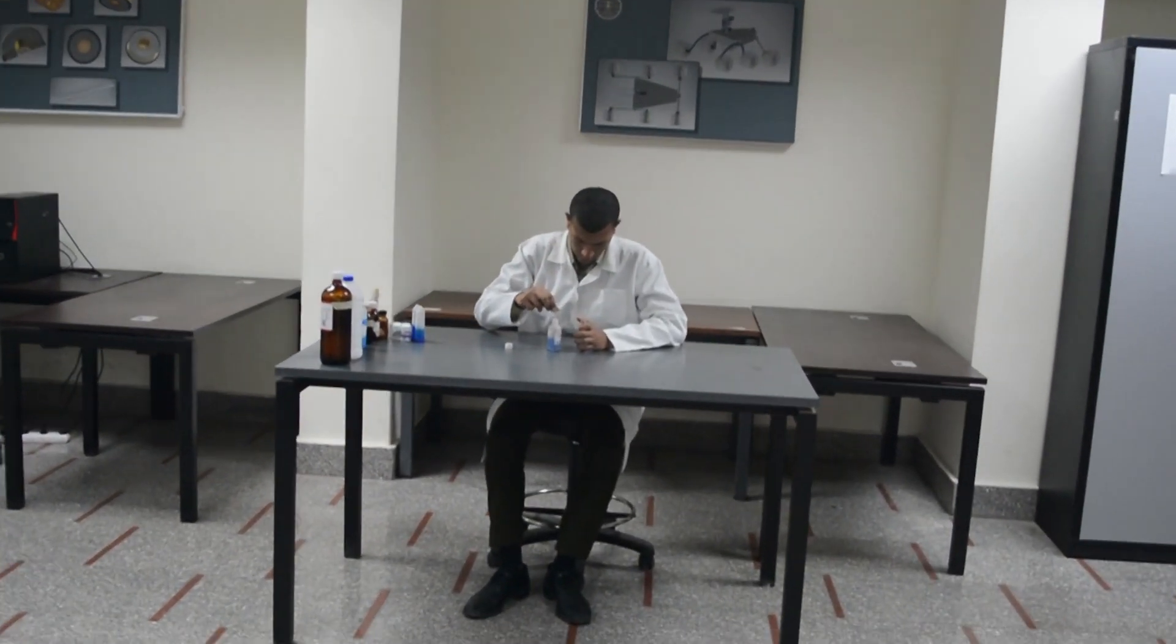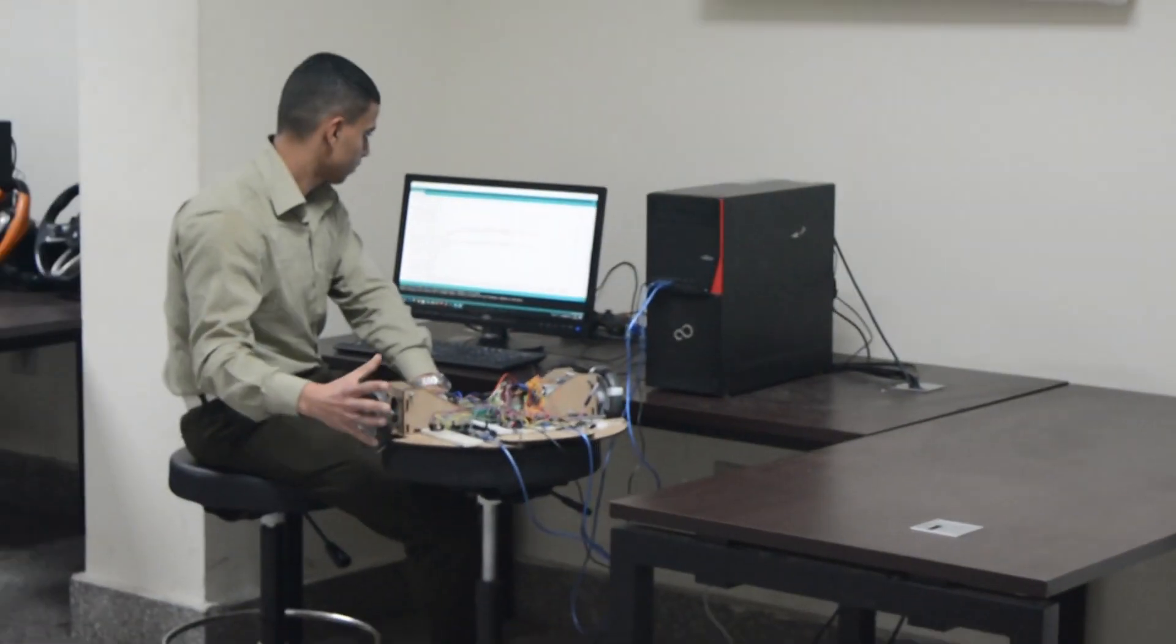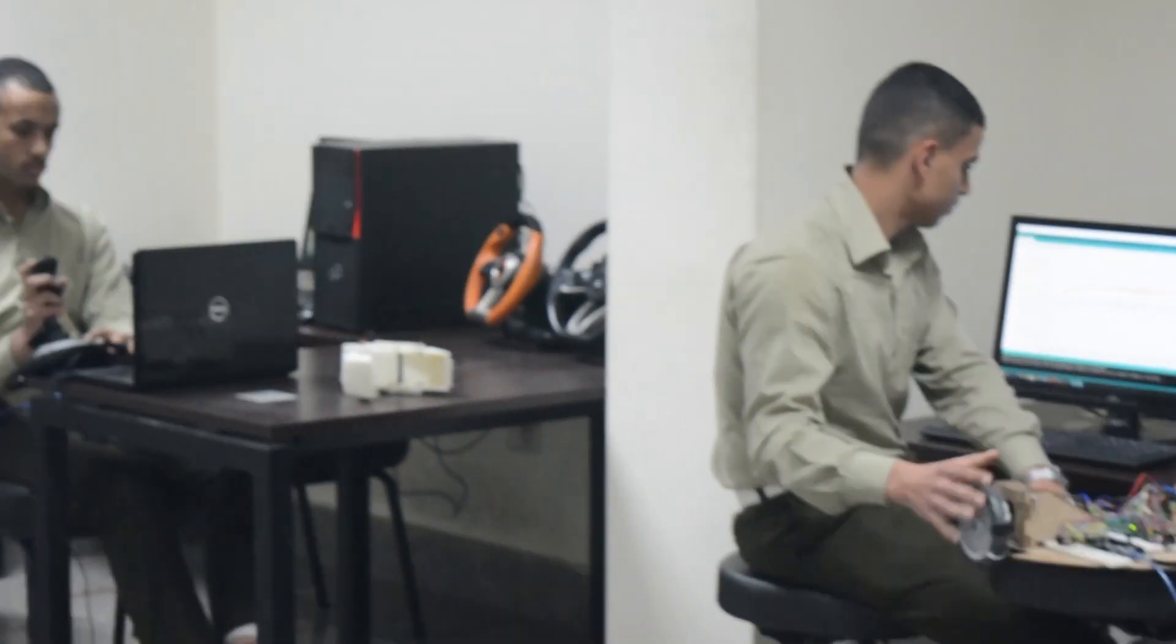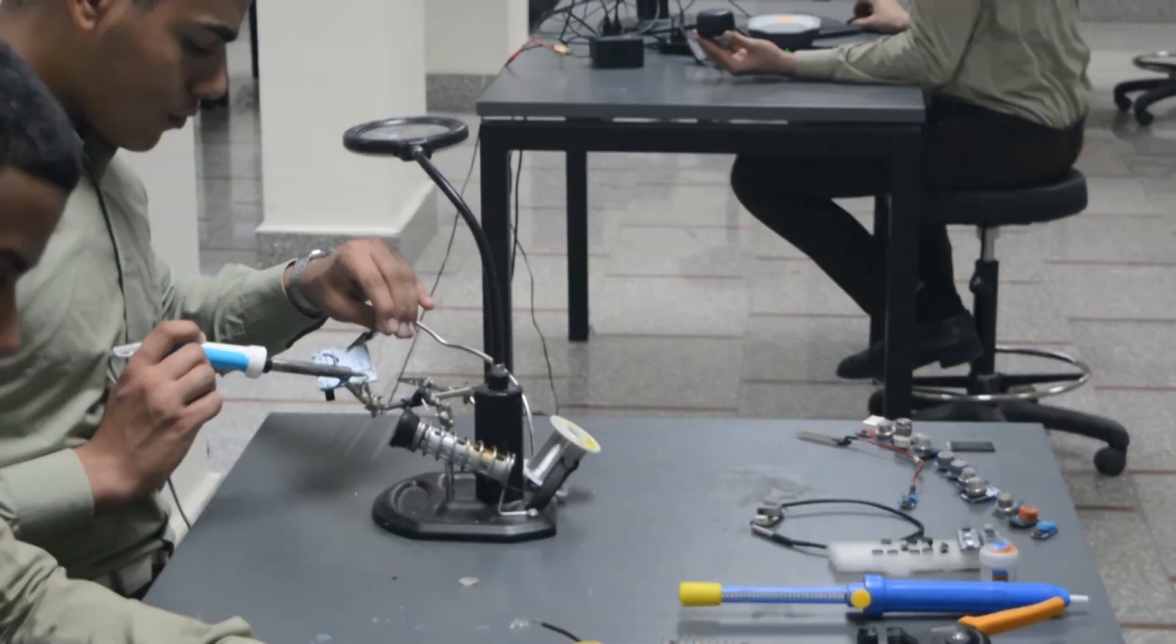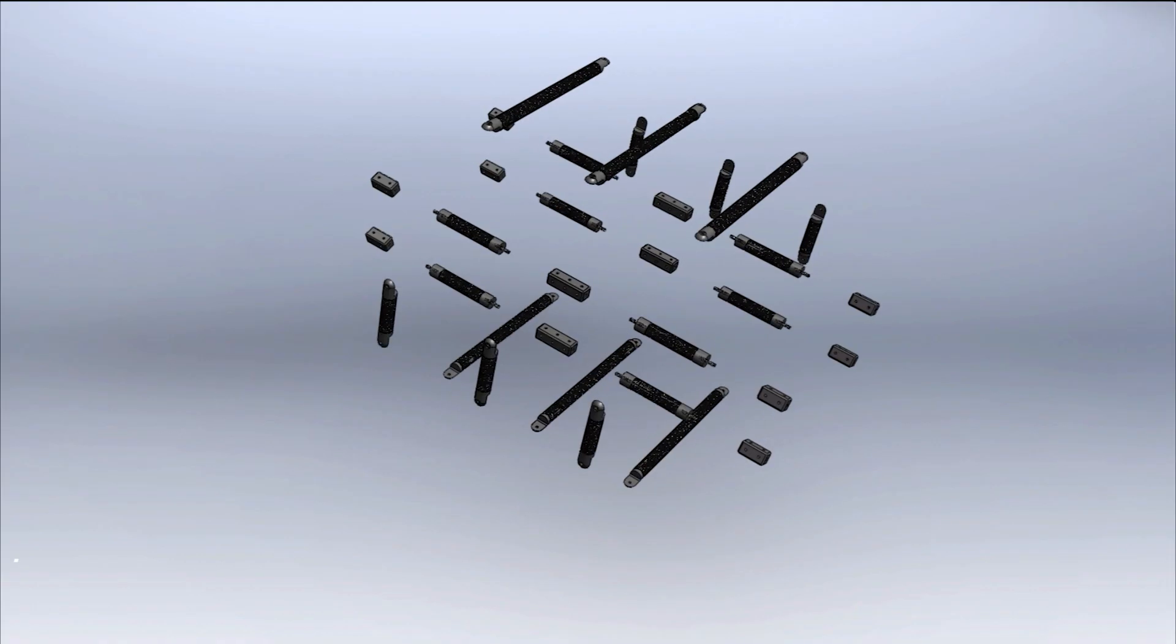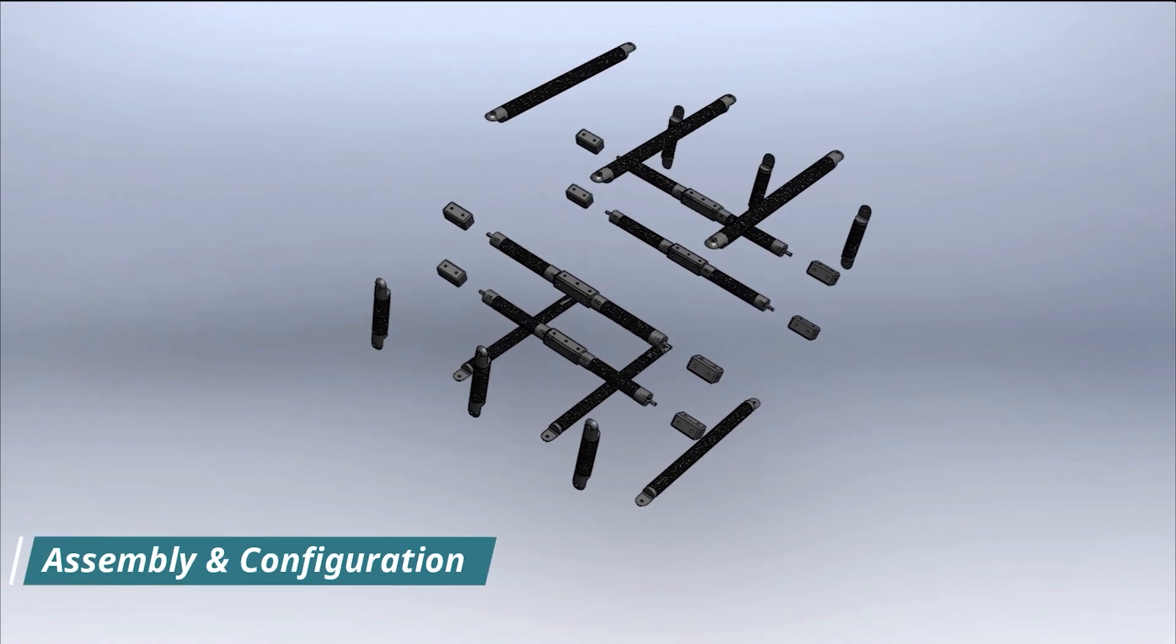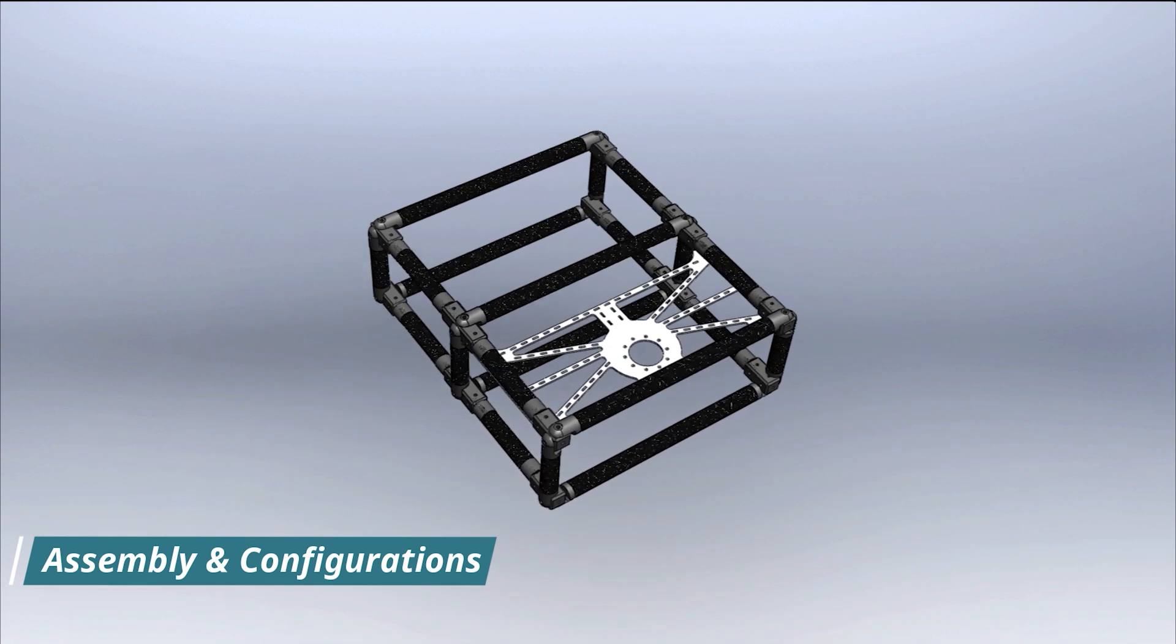Our team is split into three main groups: electrical group, mechanical group, and science group. The rover's chassis is made of carbon fiber rods assembled with screws, allowing for easy assembly and disassembly for shipping. It has three different configuration sets.